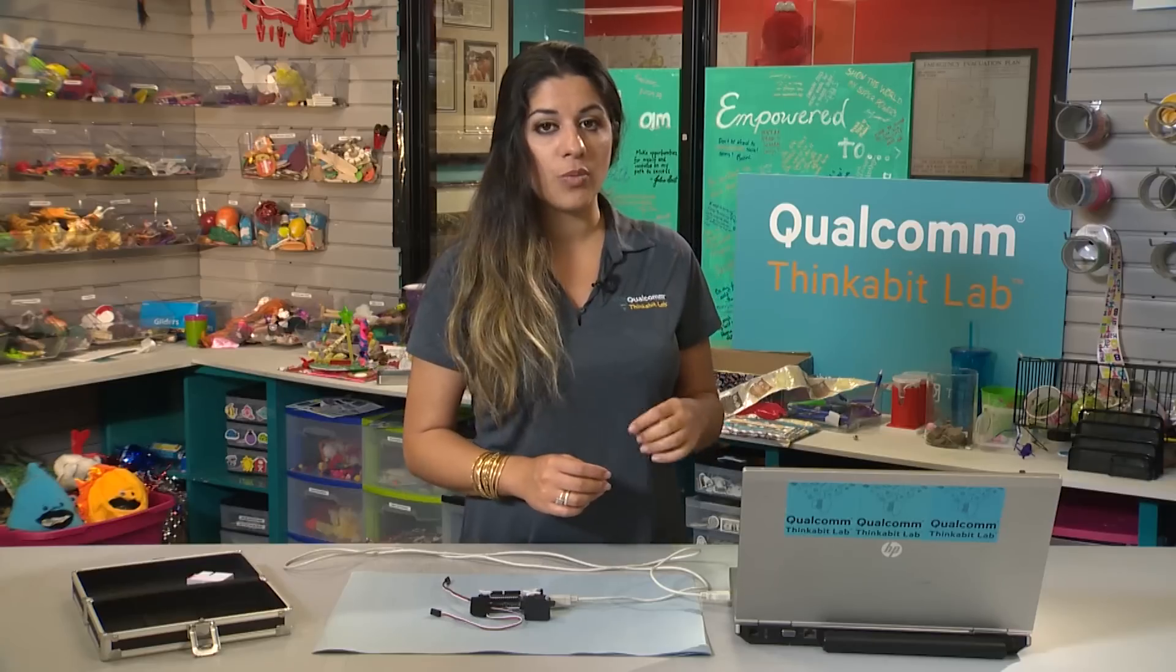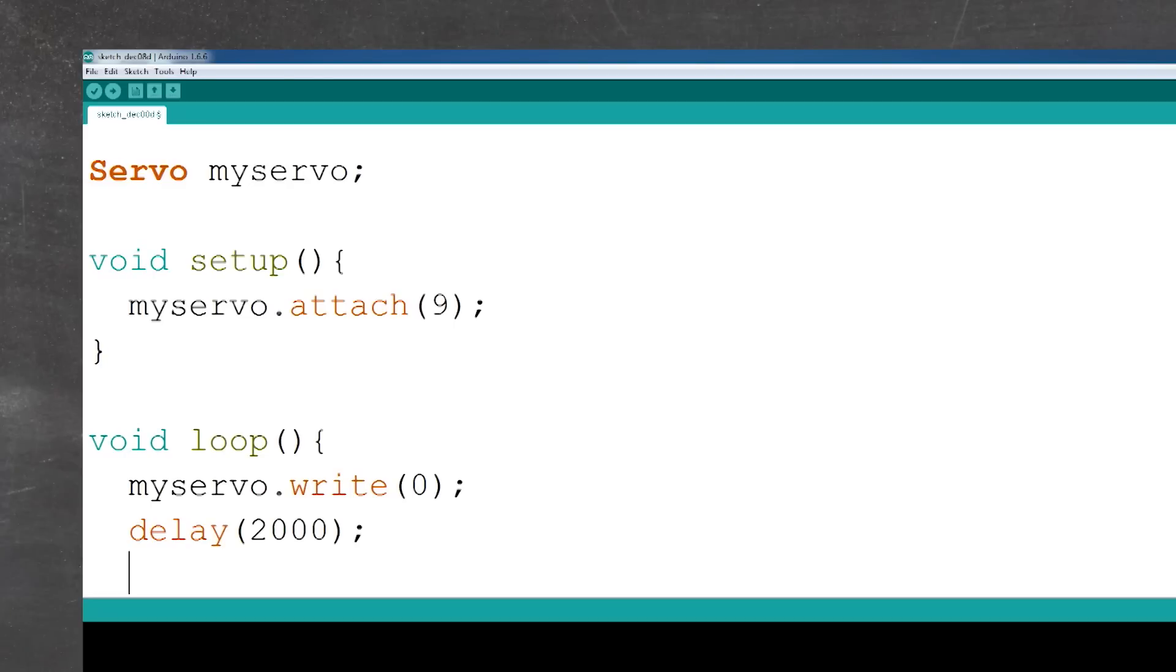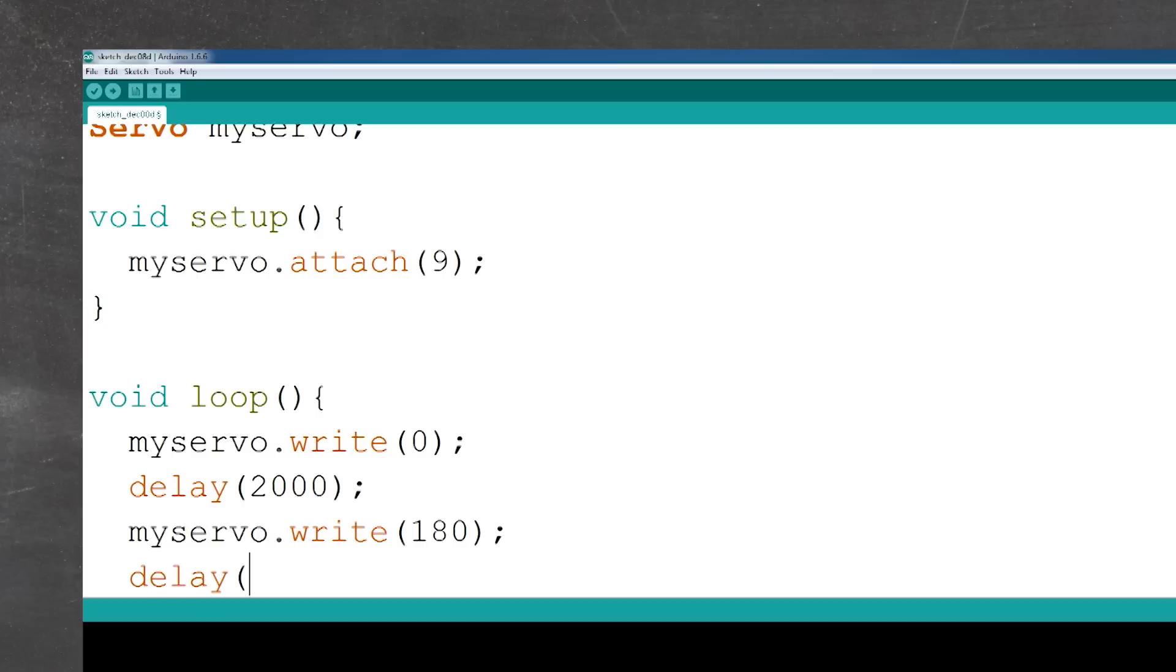But only if we keep writing code. If we left it at that, it wouldn't make much sense to have a delay. So let's keep writing myServo.write(180), and then delay(2000).